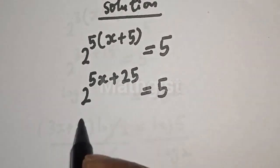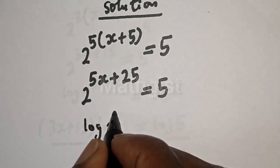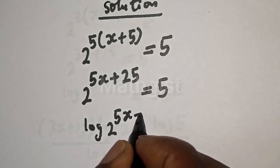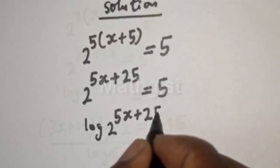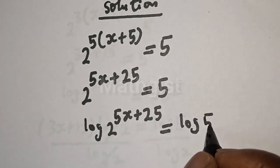Then let's take the log of both sides. Log 2 raised to power 5s plus 25 is equal to log 5.